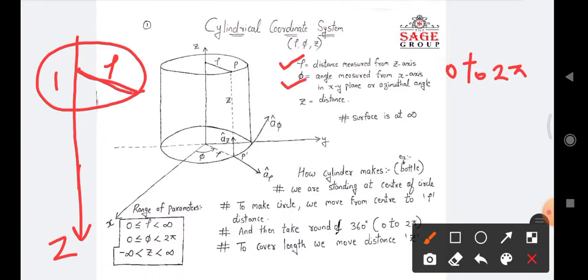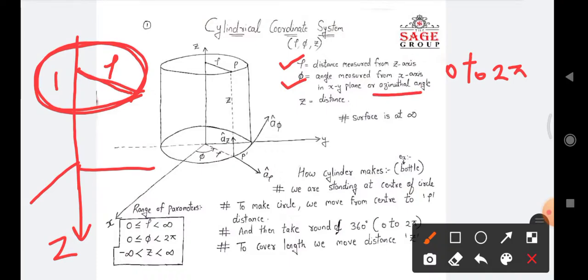What is phi? Phi is the angle measured from the x-axis in the x-y plane, also called the azimuthal angle. So how much angle do we make? It is from 0 to 2π. This is our phi angle.